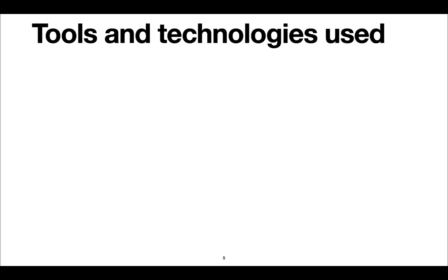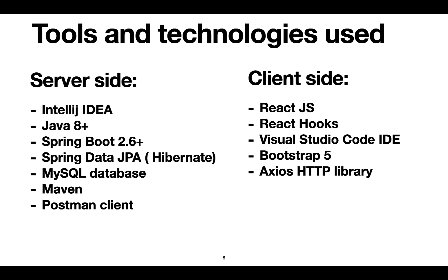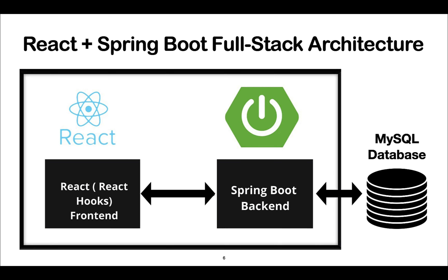For tools and technologies: on the server side we will use IntelliJ IDEA, Java 8+, the latest version of Spring Boot, Spring Data JPA, MySQL database, Maven, and the Postman client to test the REST APIs. On the client side we will use the latest version of React JS with React Hooks, Visual Studio Code for building the React application, the latest version of the Bootstrap CSS framework, and the Axios HTTP library.